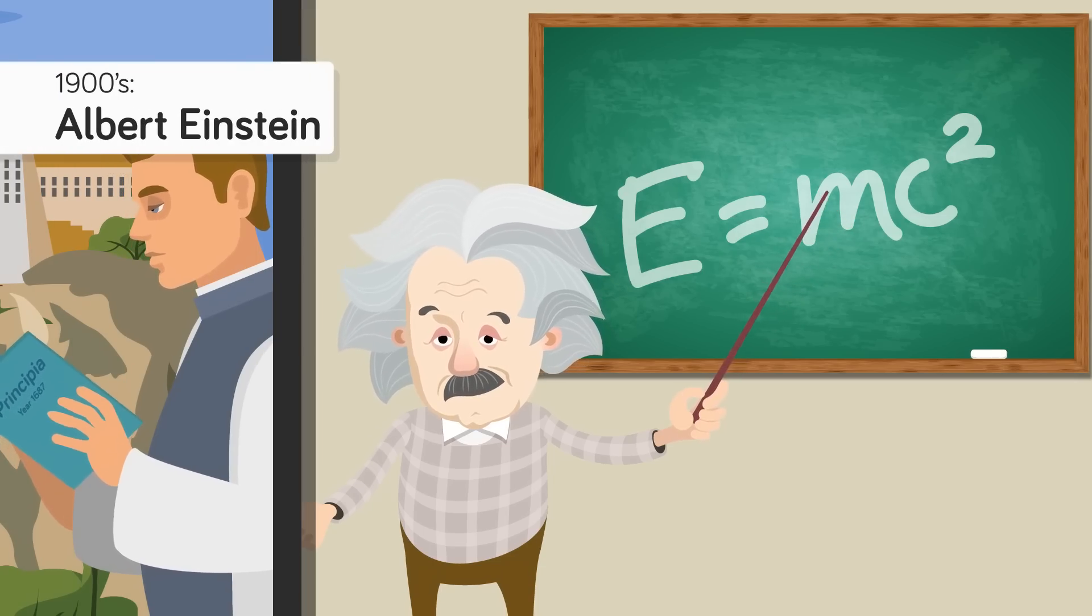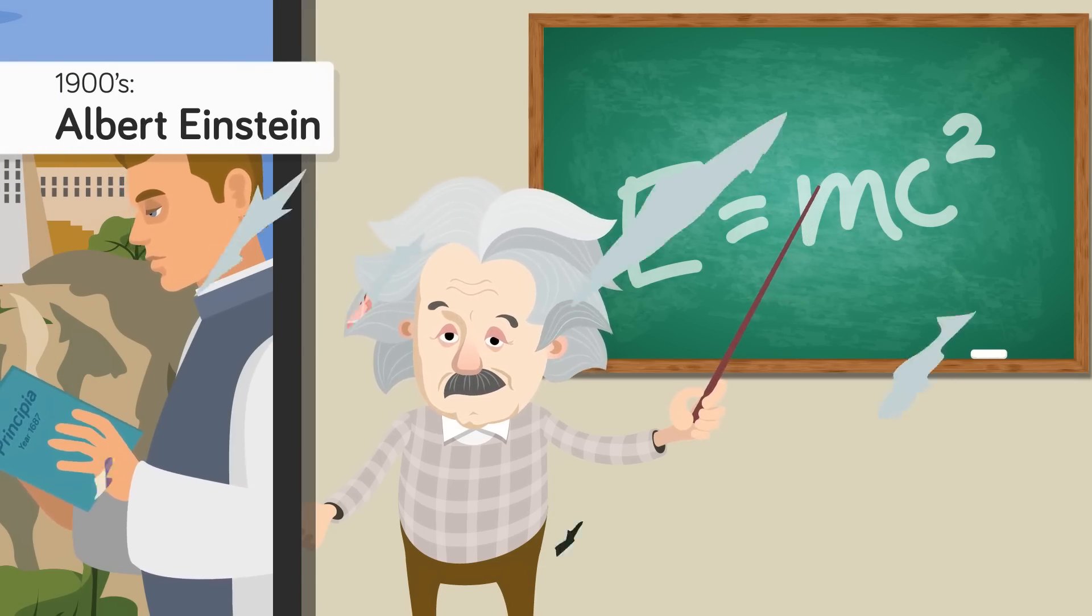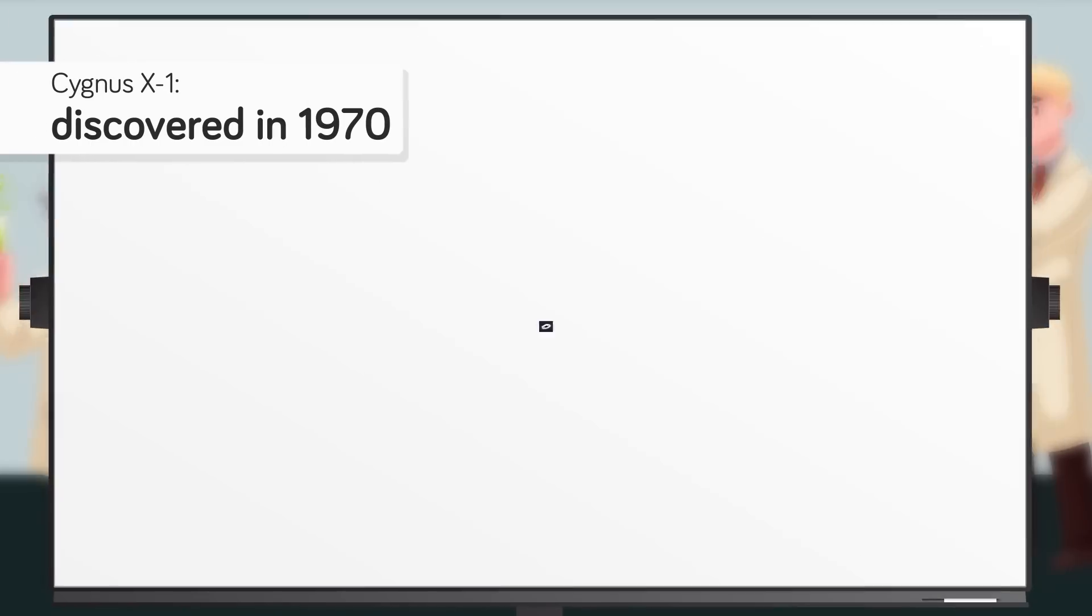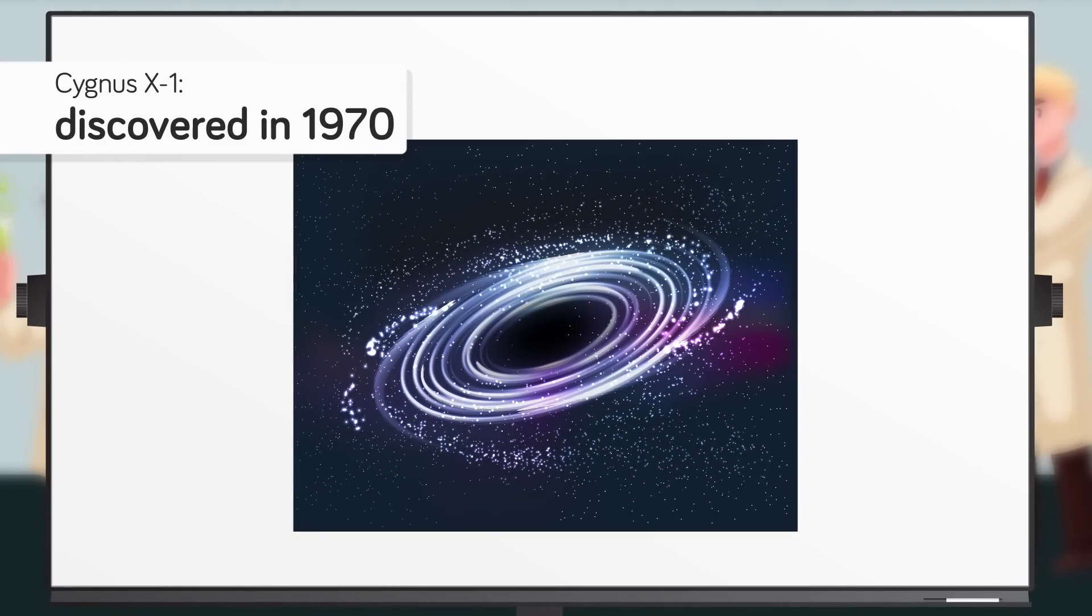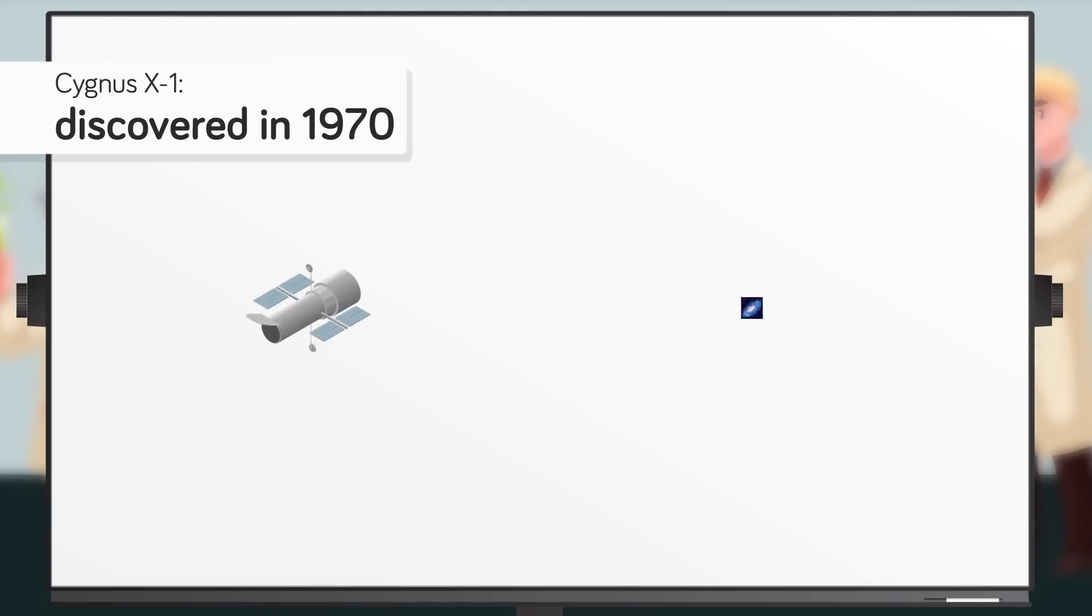This didn't jibe well with the scientific establishment, and in the 1900s even Einstein joined in on the anti-black hole bandwagon. Then in 1970 scientists discovered Cygnus X-1, which was at the time the best candidate for a real live black hole.